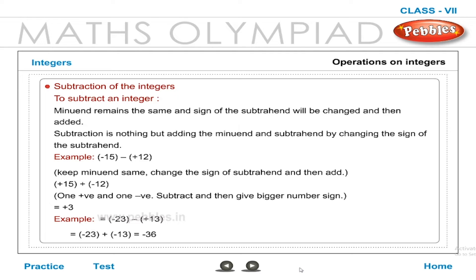Example: (−23) − (+13) = (−23) + (−13) = −36.